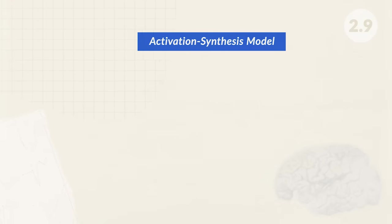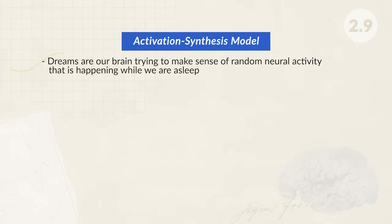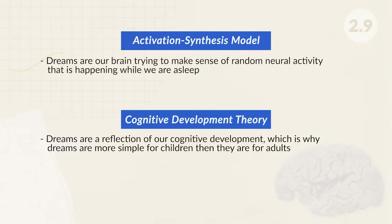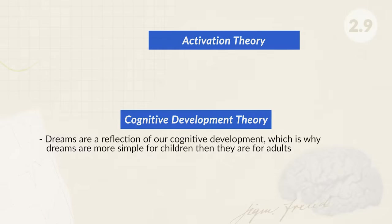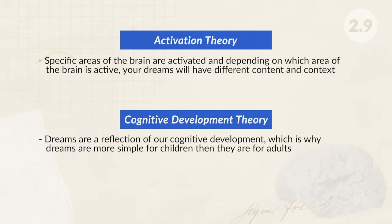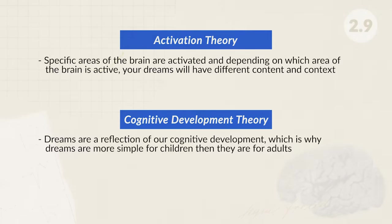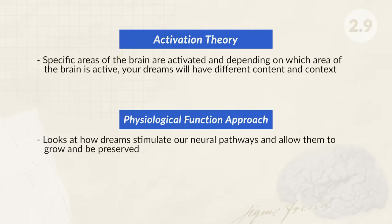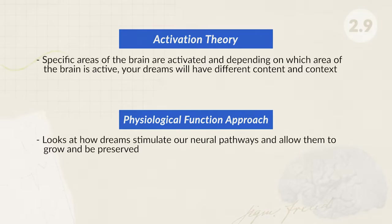There are a variety of different theories and models that seek to explain the purpose of dreams. The activation synthesis model believes our dreams are our brain trying to make sense of random neural activity happening while we are asleep. The cognitive development theory believes that dreams are a reflection of our cognitive development, which is why dreams are more simple for children than for adults. The activation theory believes that specific areas of the brain are activated, and depending on which area is active, your dreams will have different content. The physiological function approach looks at how dreams stimulate our neural pathways and allow them to grow and be preserved.